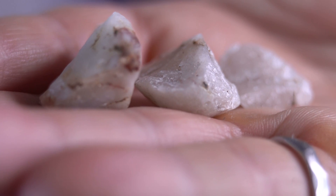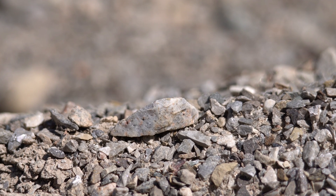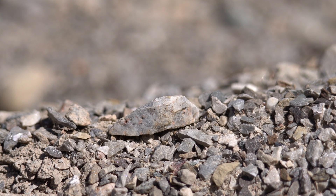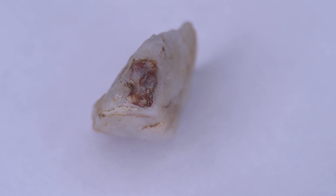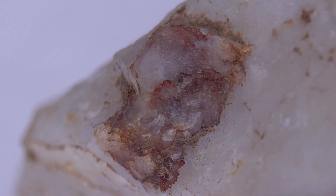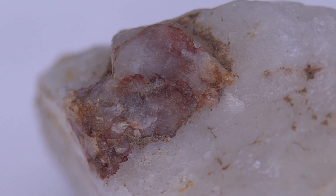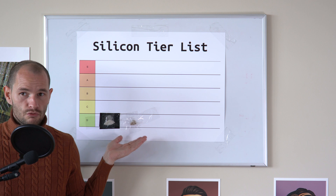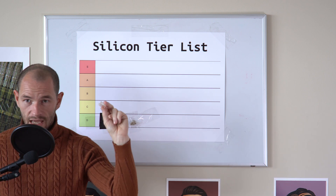Next, I have this common rock of quartz, just like one you might find on the ground outside. This rock is mostly composed of silicon dioxide, but it also contains large amounts of impurities. For this reason, I'll put this rock down in the D tier as well.